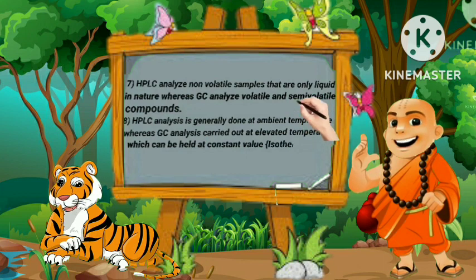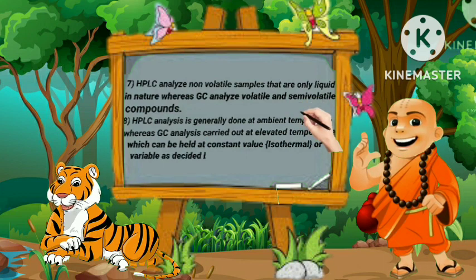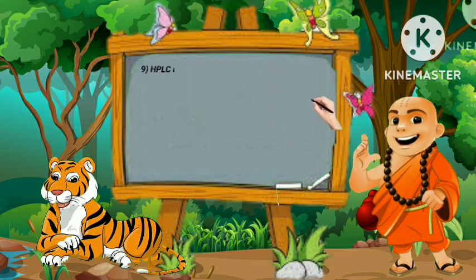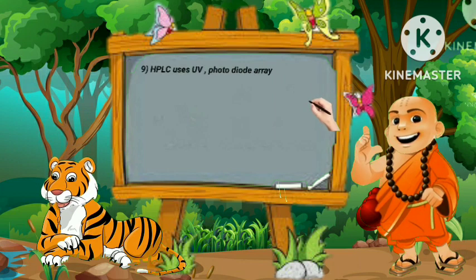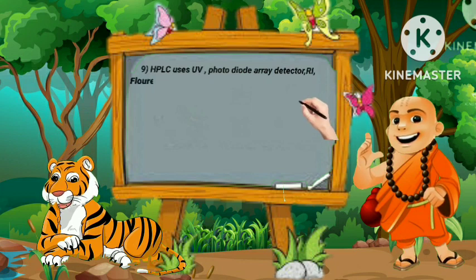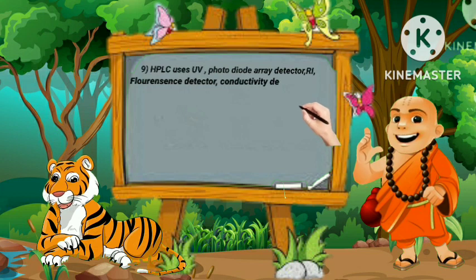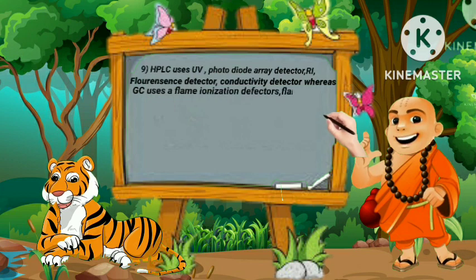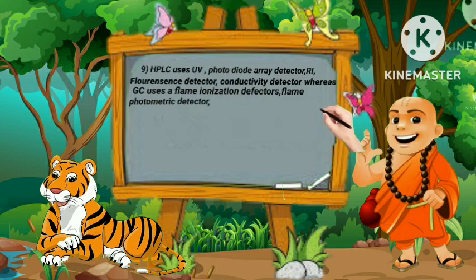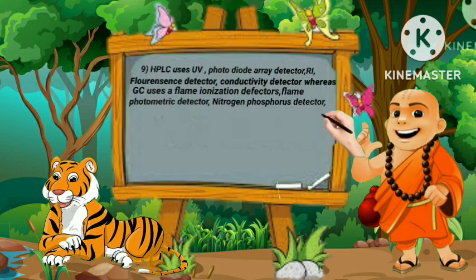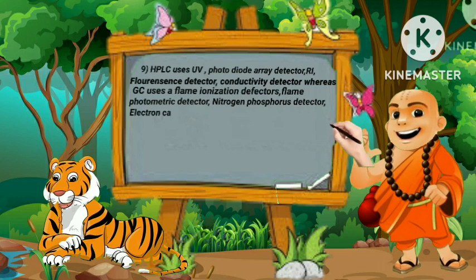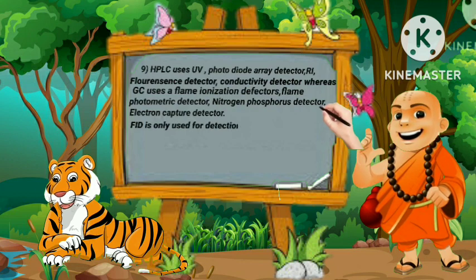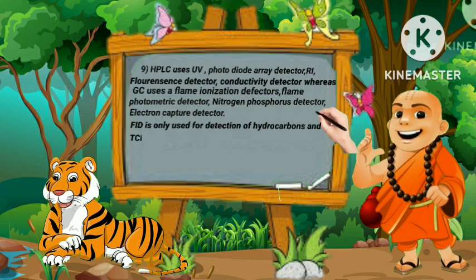Ninth, HPLC uses ultraviolet detectors, photodiode array detectors, refractive index detectors, fluorescence detectors, and conductivity detectors. Whereas GC uses flame ionization detectors, flame photometric detectors, nitrogen-phosphorus detectors, and electron capture detectors. FID is only used for detection of hydrocarbons, and TCD is universal and detects any substance.